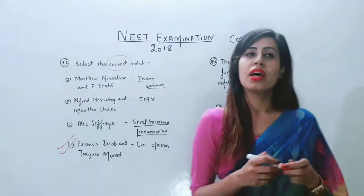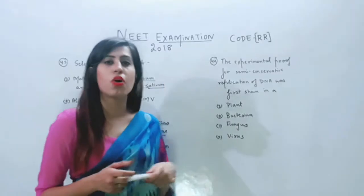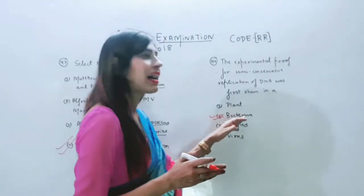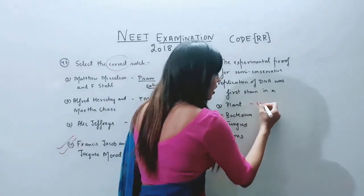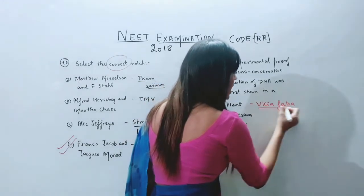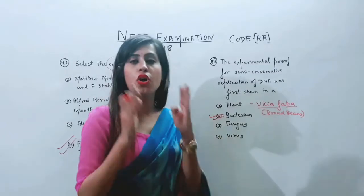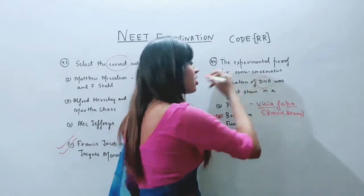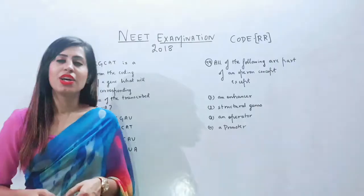Jacob and Monod gave the famous lac operon model in prokaryotes. So the correct answer is option number four. The next question: the experimental proof for the semi-conservative mode of DNA replication was first shown in — the correct answer is E. coli, which is a bacterium. Taylor did perform this experiment on Vicia faba, which are broad beans, but that was at the chromosomal level. Since the question asks about DNA, the correct answer is option number two — E. coli.